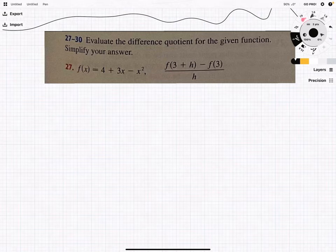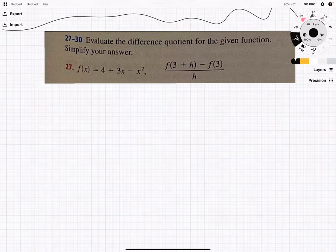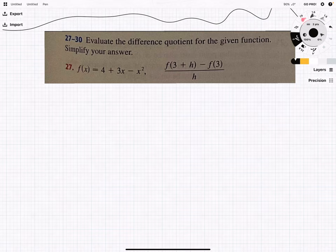This is every problem of Stewart Calculus 8th edition, chapter 1, section 1, problem 27. For the next four problems, it says evaluate the difference quotient for the given function, and now this is important, it does say simplify your answer.